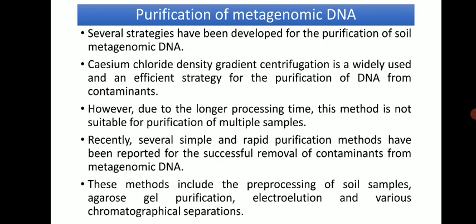Purification of metagenomic DNA is essential since most analytical methods depend on a purified DNA sample for efficiency and accuracy. Several strategies have been developed: the first is cesium chloride density gradient centrifugation, which is widely used and efficient but has longer processing time, making it unsuitable for multiple samples. Recently, simpler and rapid methods have been reported, including agar gel purification, electroelution, and chromatographic techniques.